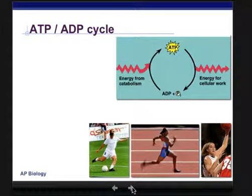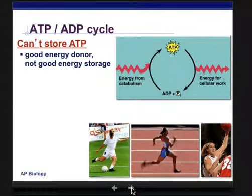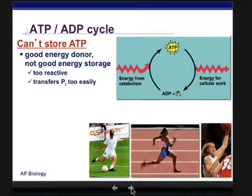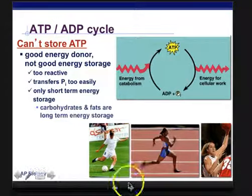Now, going back and forth between ATP and ADP: ATP can't really be stored. Remember that it's very unstable. It's a good energy donor, but not good for storage — it's super reactive, ready to ditch that phosphate. So it's just short-term energy storage, because it is going to ditch its phosphate at the first opportunity. If we want to really store energy, we store it in molecular bonds, in complex molecules like carbohydrates and fats.